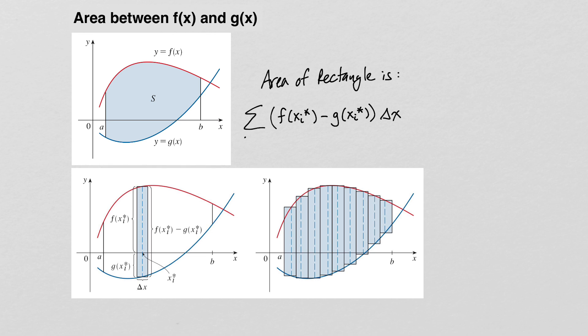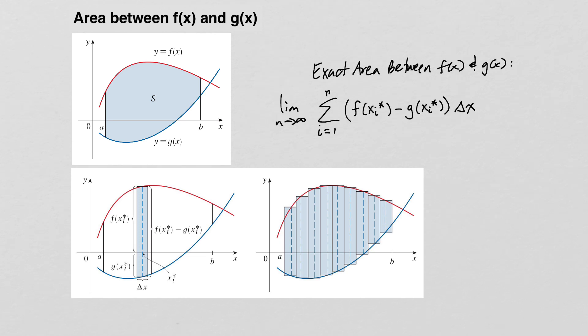We take the sum i equals 1 to n. To get the exact area, we need more rectangles, so ultimately we take the limit as n goes to infinity of this sum. This is the limit of a Riemann sum, and when you take the limit of a Riemann sum you get a definite integral. So the area between f of x and g of x is the integral from a to b of f of x minus g of x times dx.